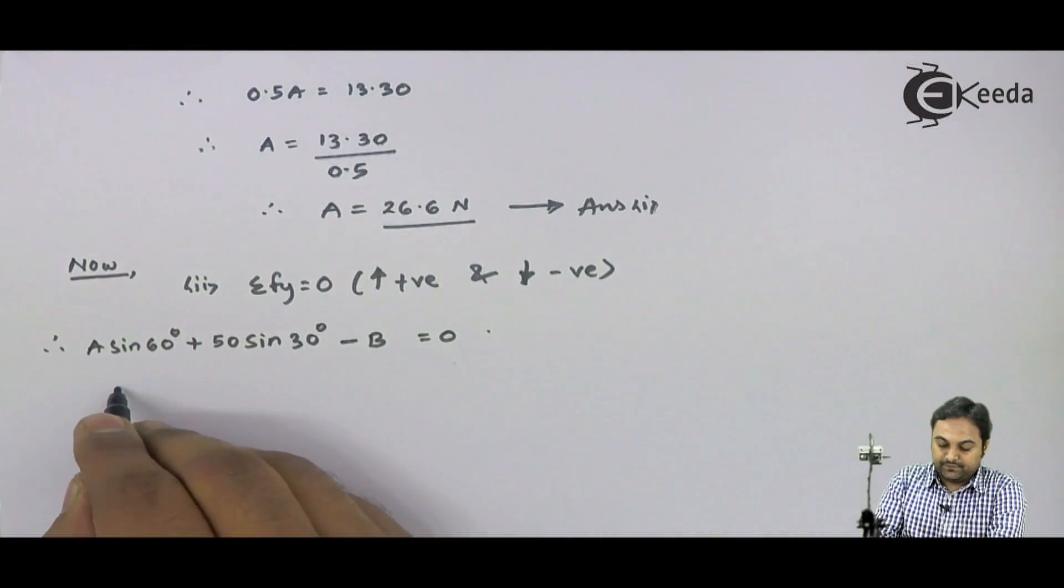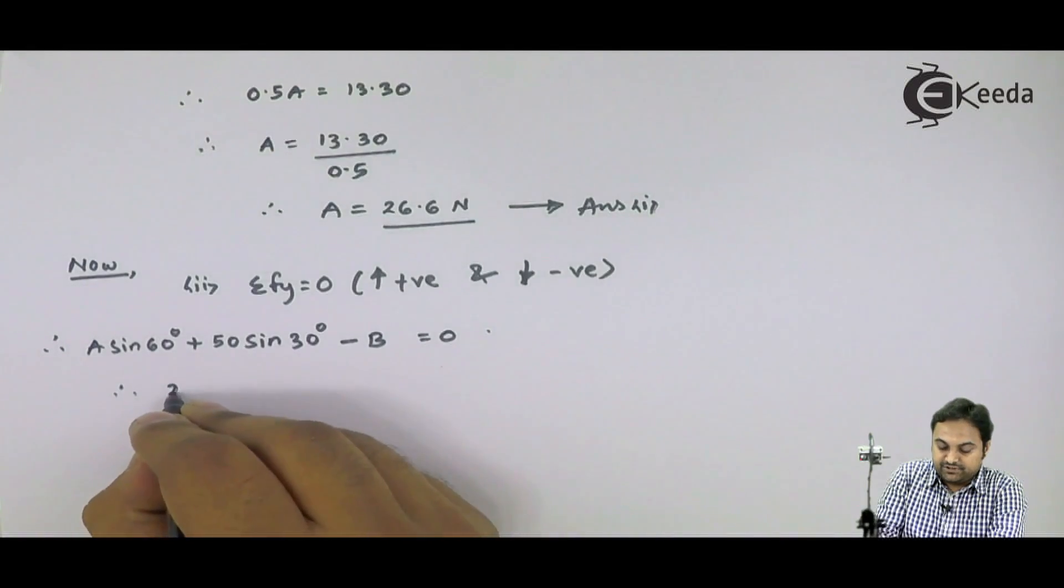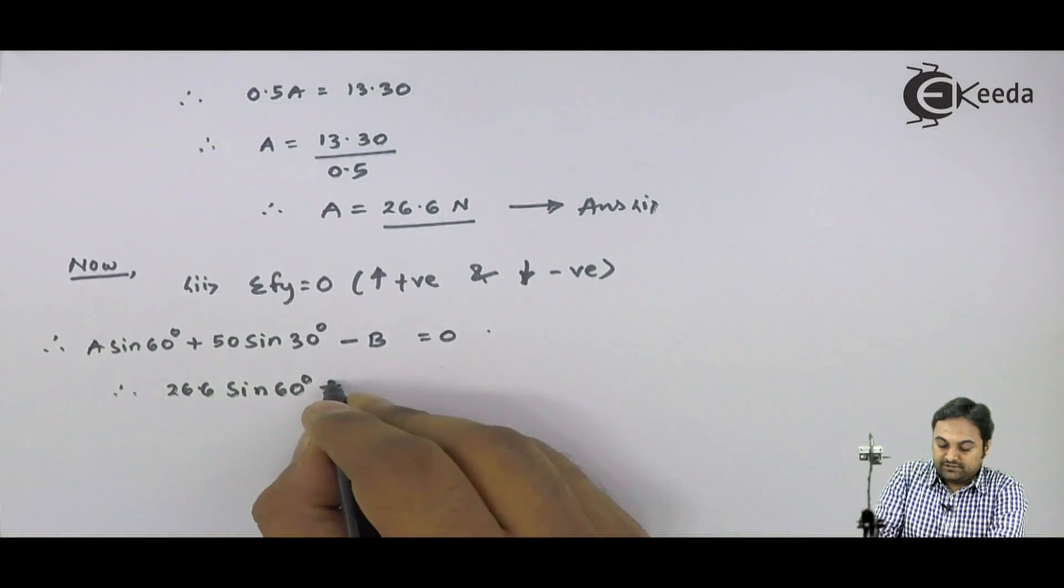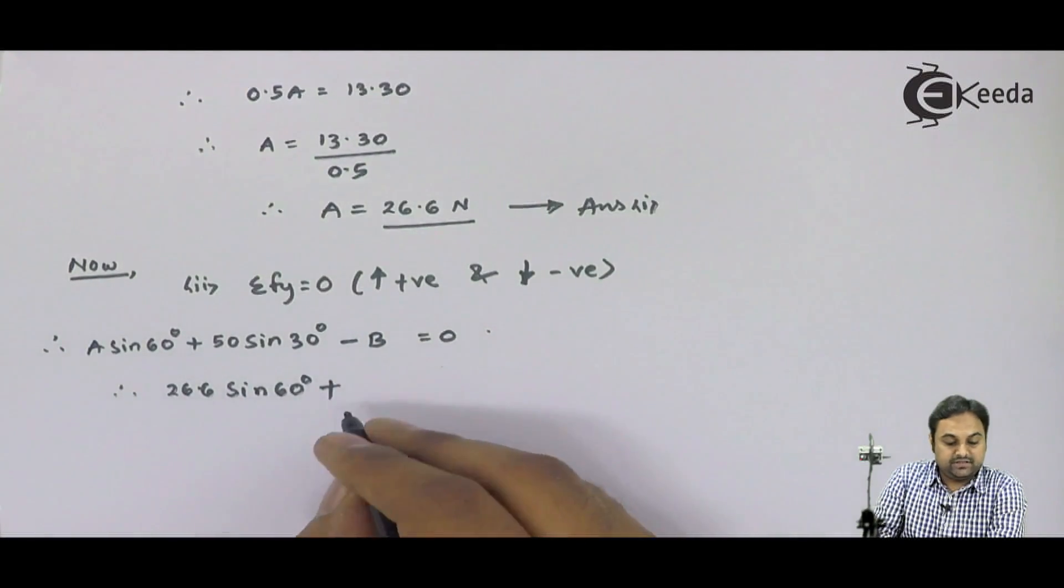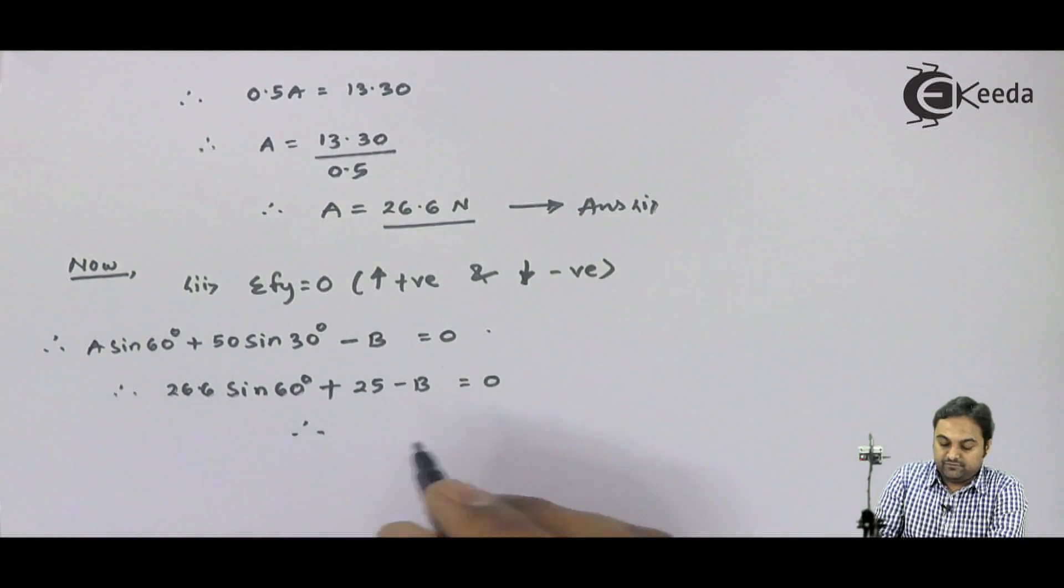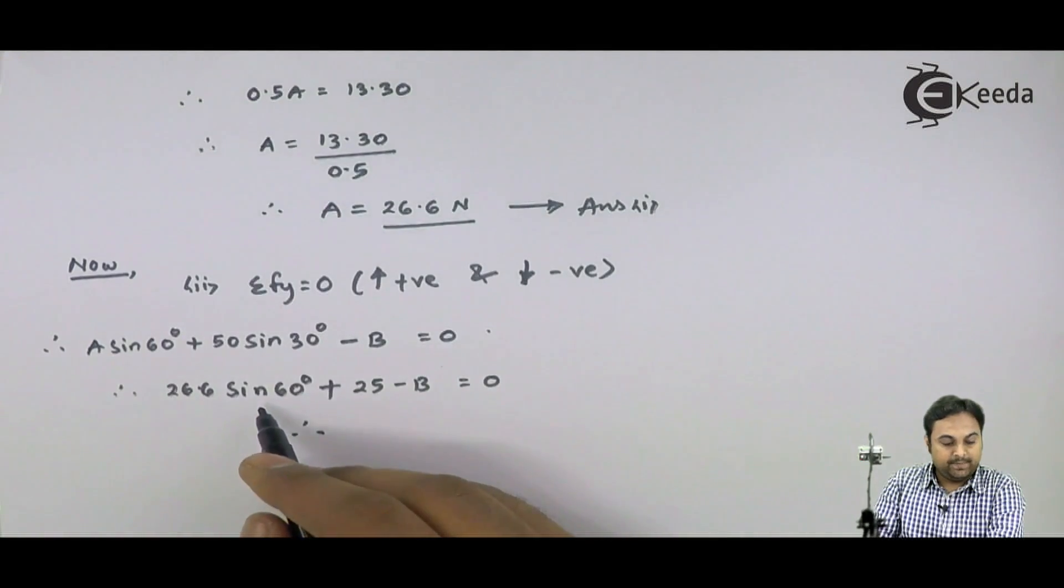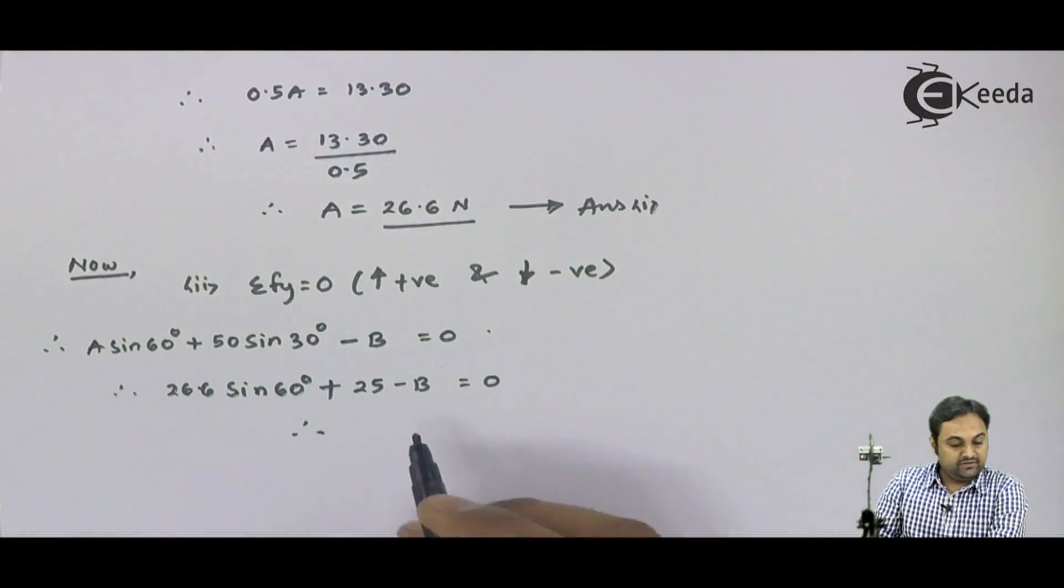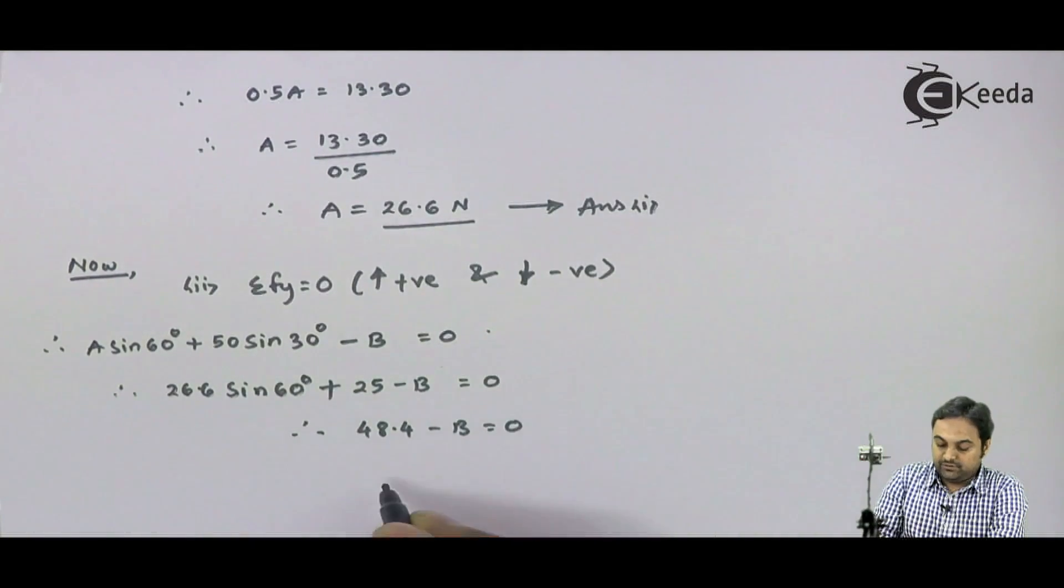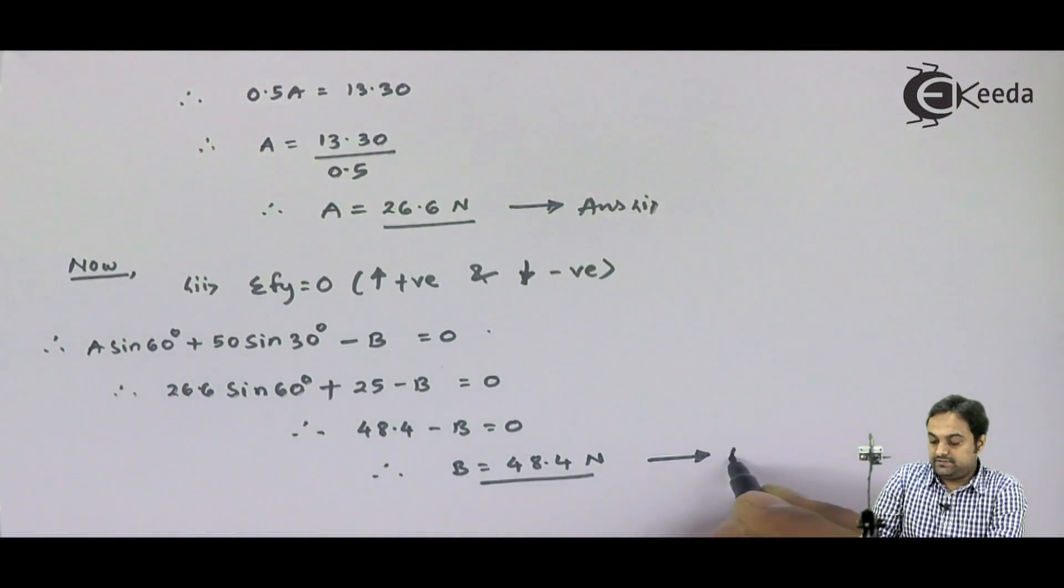Therefore, 26.6 sin 60 plus 25, the answer is 48.4 minus B is equal to 0. And therefore B is equal to 48.4 Newton. That is my second answer.